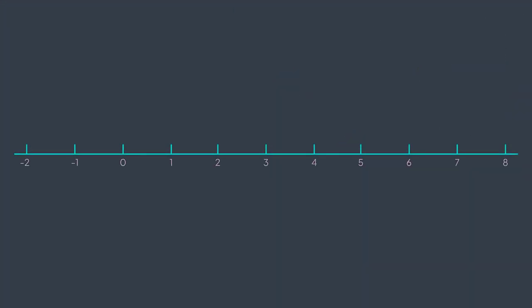Welcome to this new video where we will solve the heaters problem. We have a horizontal line with houses, for example at positions one, three, four, six, eight. These houses have to be heated. For that we have heaters at certain positions, for example at positions one and five. We are given the ability to modify their radius — the more we increase the radius of a heater, the more it covers houses. The problem says we need to find the minimum radius to give to the heaters to cover all the houses.